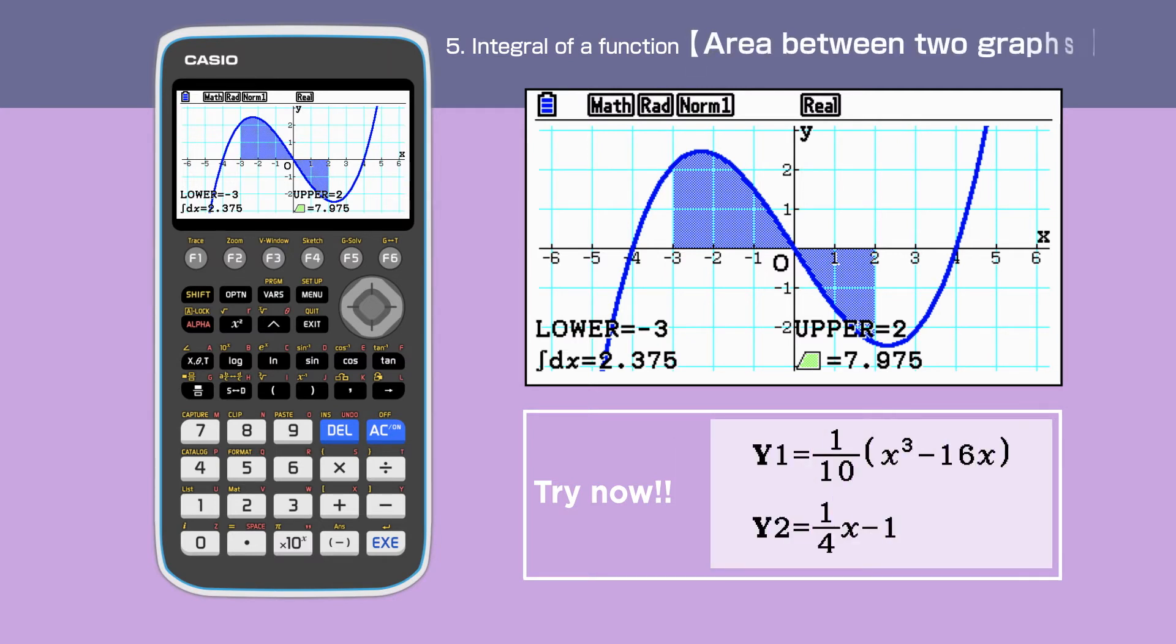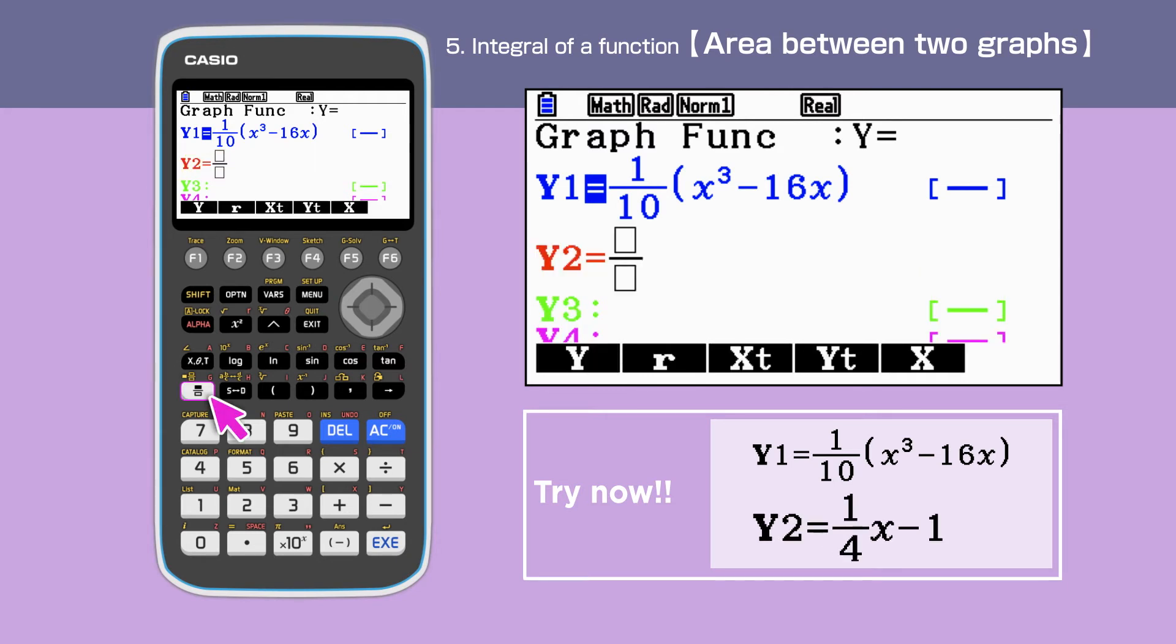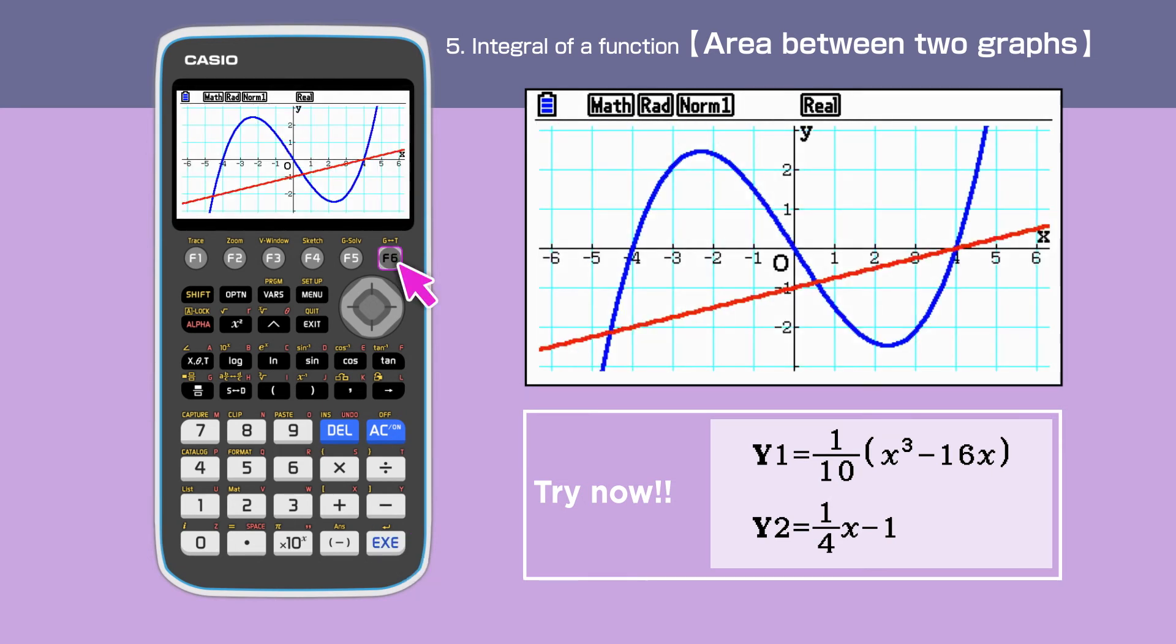Next, we will find the area between two functions. Press Exit and go back to the graph function menu. Enter 1 over 4 x minus 1 in y2 and press F6 to draw the graph.